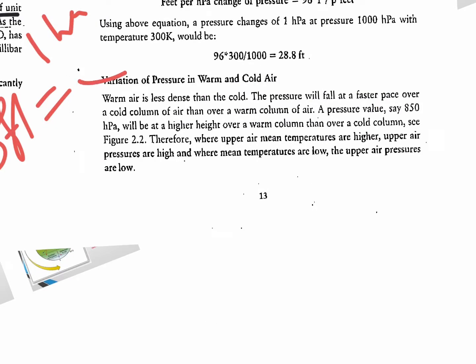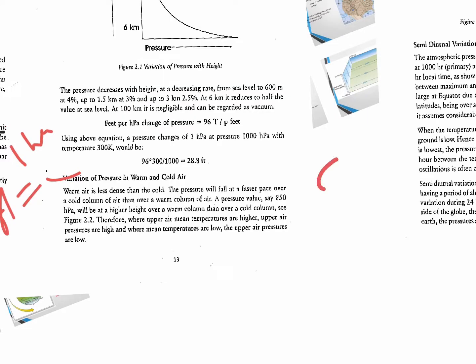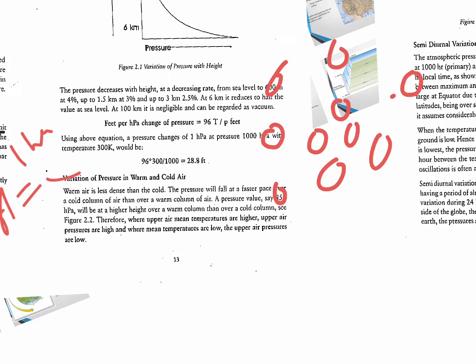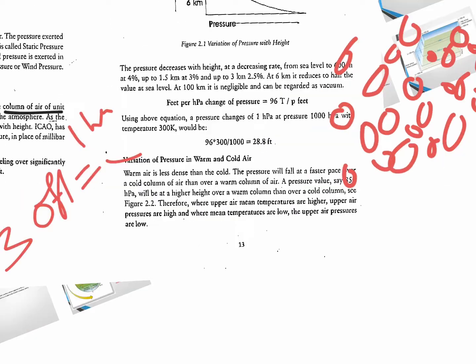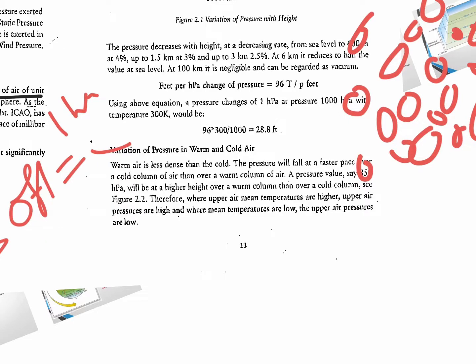Now let's look at the variation of pressure in warm and cold air. Warm air is less dense than cold air — in warm air the molecules are expanded and spread out, so density is lower. In cold air, molecules exist very close to one another, so cold air is more dense. A pressure value such as 850 hectopascals will be found at a higher altitude over a warm air column than over a cold air column.